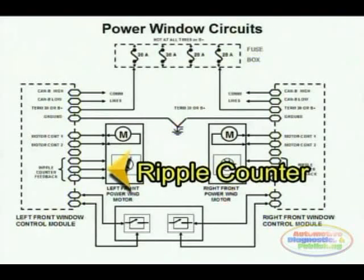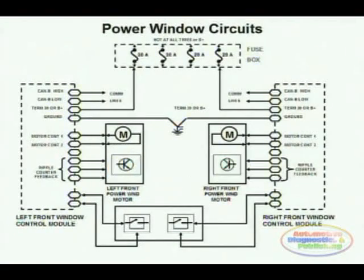This way, the computer knows the position of the motor at all times. Rather than using a mechanical potentiometer, for example, the window module is referring to the counts of the current humps to control this motor, using those humps as a form of feedback.